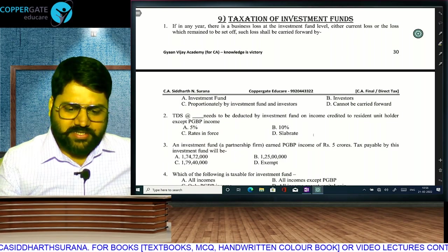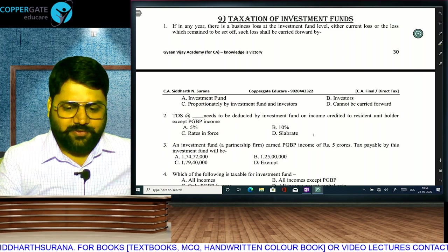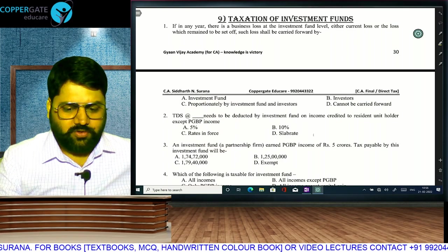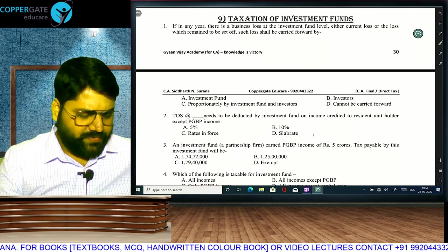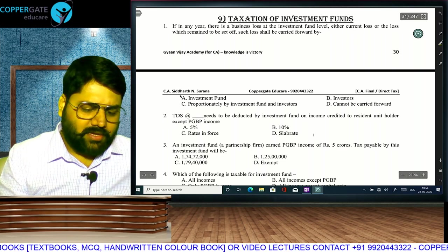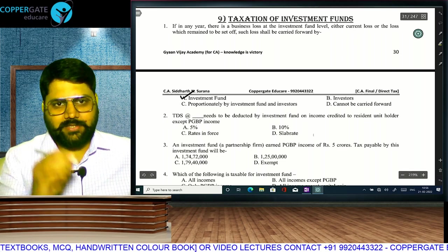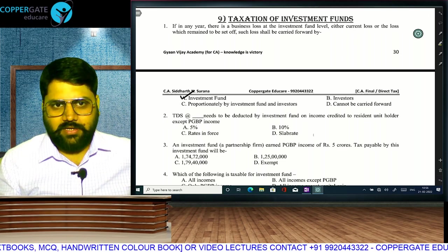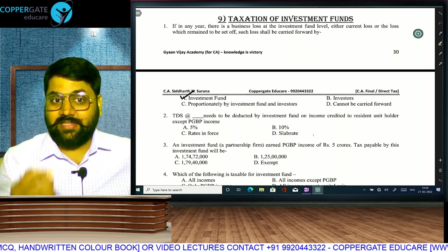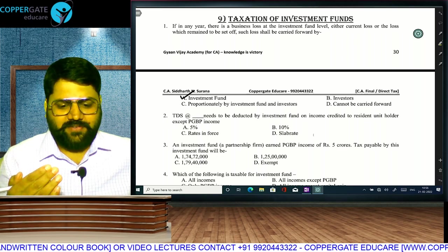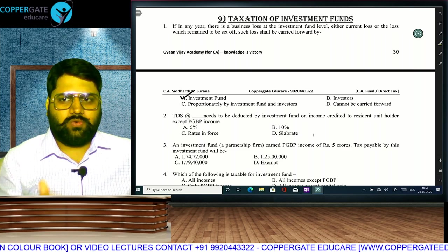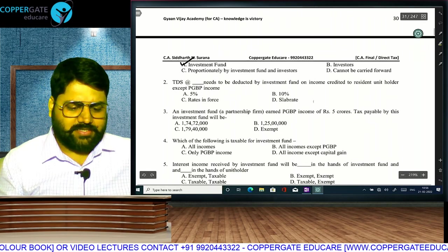If in any year there is business loss at the fund level, either current loss or the loss which remains to be set off, who will carry forward? Business loss will be carried forward by the investment fund. Profit also — the fund will pay tax. Loss will also be carried forward by the fund. If it is other heads, then profit will be passed through. And loss also now we pass through. The system has changed.